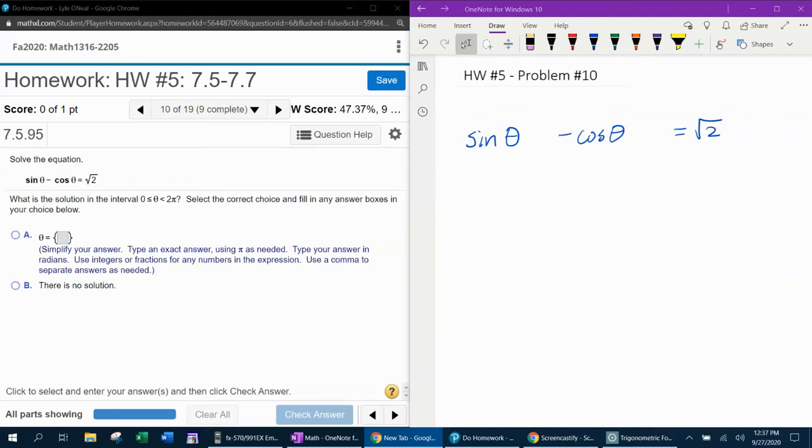All right, here we go. Question number 10 from our 1316 homework number 5 in MyLab Math. They want us to solve the equation sine theta minus cosine theta equals square root of 2 on the interval from 0 to 2 pi. So there's either no solution or there is a solution and we're going to need to input the solution.